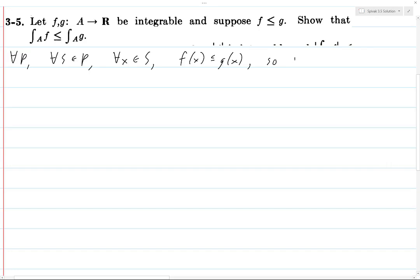So if we take the infimum of F over all, the infimum of F of X over all S, then that must be less than or equal to the infimum of G of X over all S.